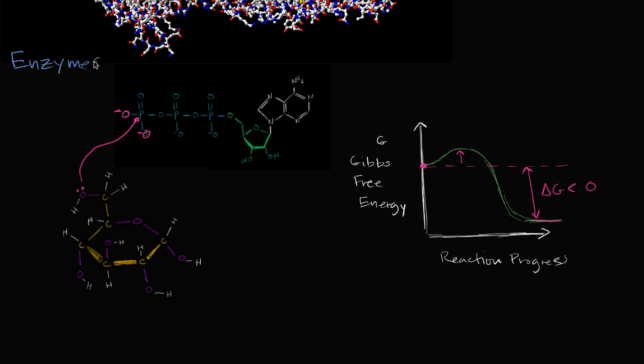And the way that an enzyme might catalyze this reaction is maybe it can provide some positive charges around these negative charges to pull them further away, to create space so that you can actually have the reaction proceed. And so what an enzyme would do, it would make this curve, instead of having this hump on it, the curve would look more like this, so that the reaction can just proceed.